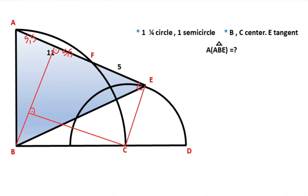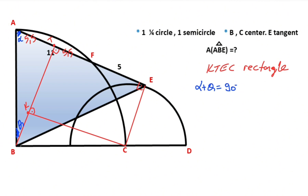If you notice, we get a rectangle. Let's call this point K and this point T. So KTEC is a rectangle. After that, let's call this angle alpha and this angle theta. Notice that alpha plus theta equals 90 degrees, so this angle must equal alpha, and this angle must equal theta.